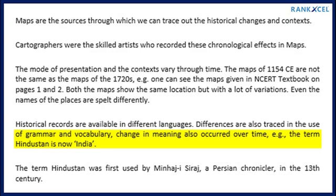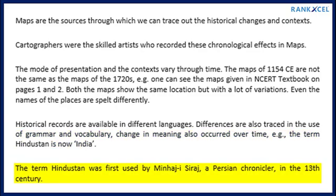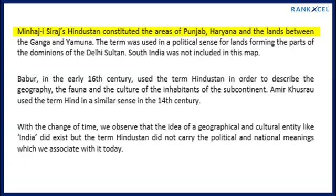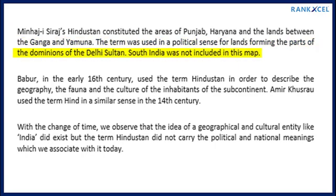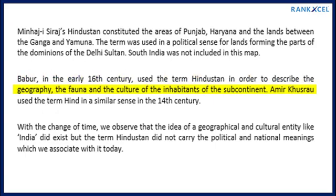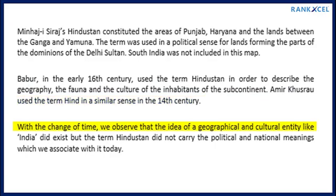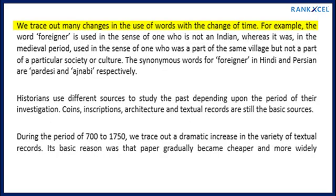Change in meaning also occurred over time. For example, the term 'Hindustan' now means India, but it was first used by Minhaj-i-Siraj, a Persian chronicler, in the 13th century to refer to the areas of Punjab, Haryana, and the lands between the Ganga and Yamuna — in a political sense, for lands forming part of the Delhi Sultanate. South India was not included. Babar in the early 16th century used 'Hindustan' to describe the geography, fauna, and culture of the subcontinent. Amir Khusro used the term 'Hind' similarly in the 14th century. The idea of a geographical and cultural entity like India did exist, but 'Hindustan' did not carry the political and national meanings we associate with it today.